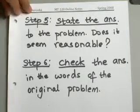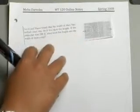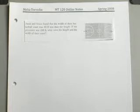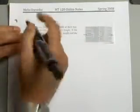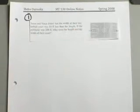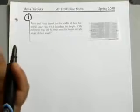Let's start with our first example. In this example, we are going to talk about a basketball court. Jason and Vince found that the width of their basketball court was 44 feet less than the length. If the perimeter of the basketball court was 288 feet, what were the length and width of their court? You have to first see what information is given to you and how to interpret that information.